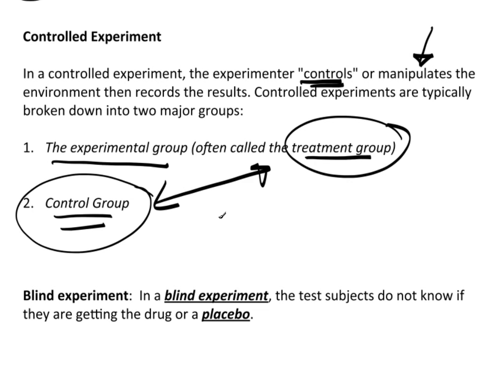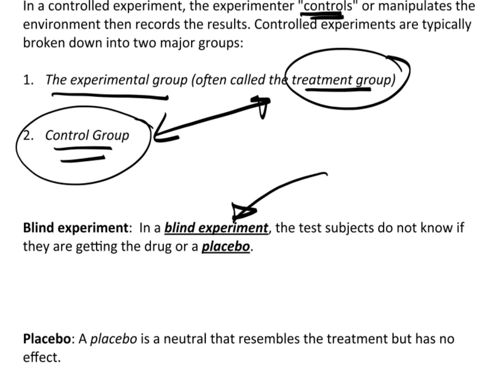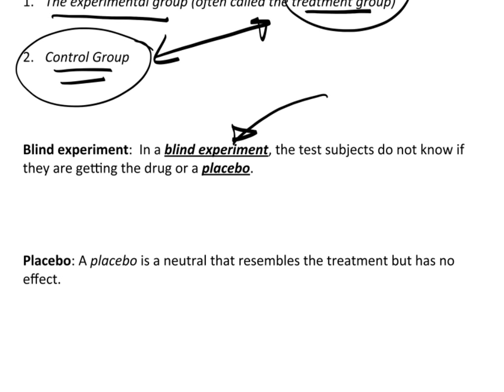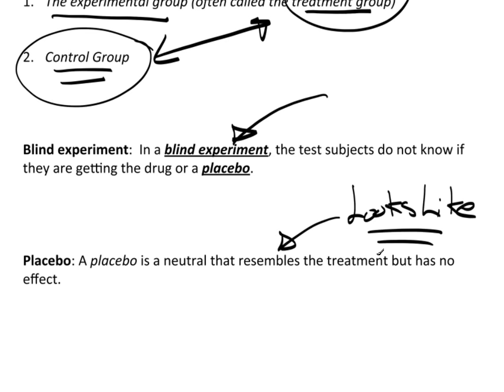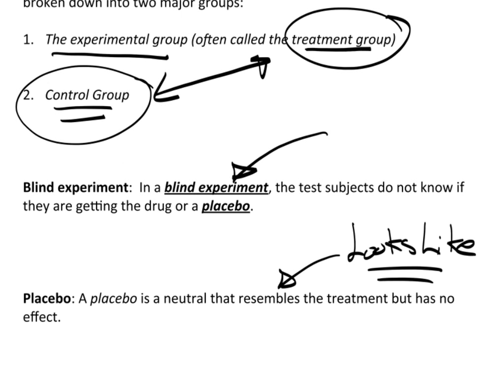Very commonly in medical studies, we do what's known as a blind experiment. In a blind experiment, the test subjects do not know if they're getting the real drug or a placebo. A placebo is something neutral or inert that resembles a treatment but has no effect. So if the treatment is some type of purple pill, then the placebo will probably also be a purple pill, so that people in the groups can't compare notes and figure out who's getting the real thing. The whole idea behind the blind experiment is to avoid what's known as the placebo effect.